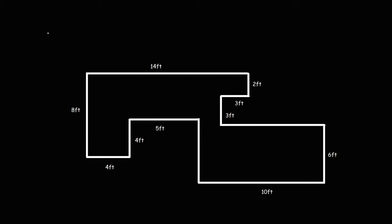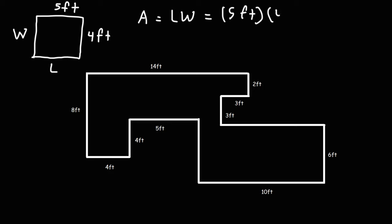In order to calculate the square footage, we need to know the formula to calculate area. Let's say we have a rectangle, and we know the length and the width of the rectangle. So let's say the width is 4 feet and the length is 5 feet. The area is going to be length times width. So it's 5 feet times 4 feet. 5 times 4 is 20, and feet times feet is square feet.